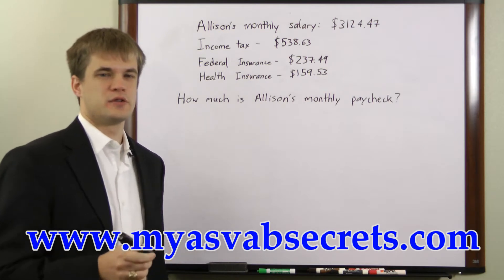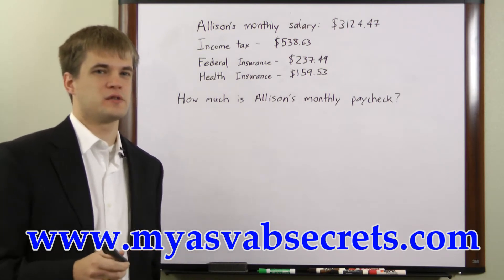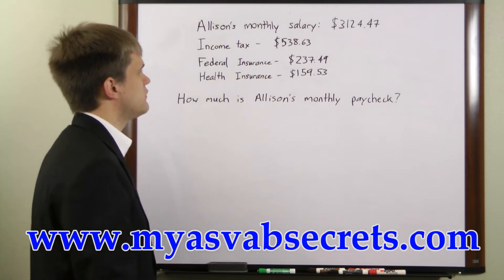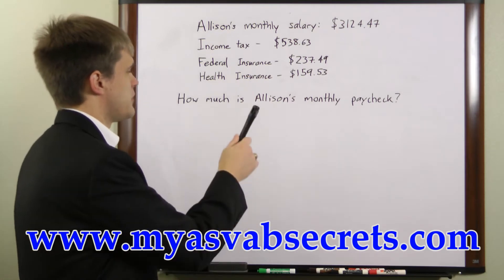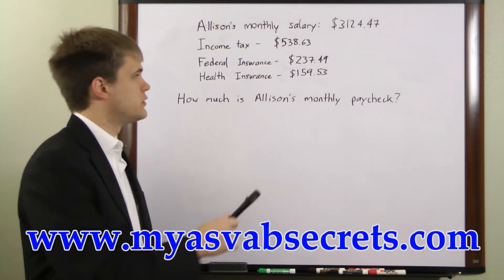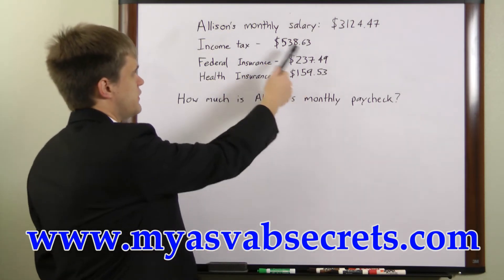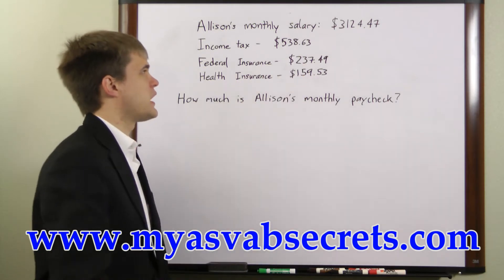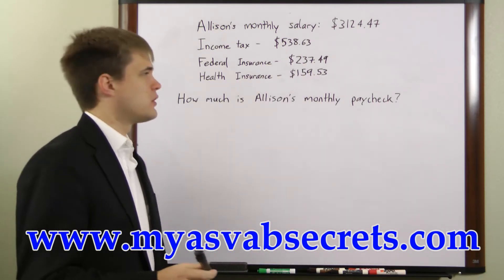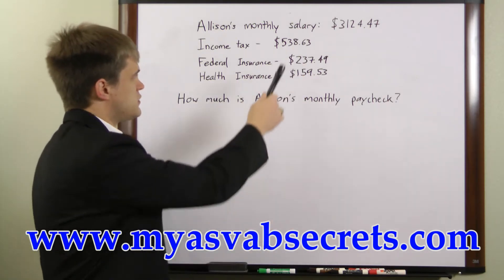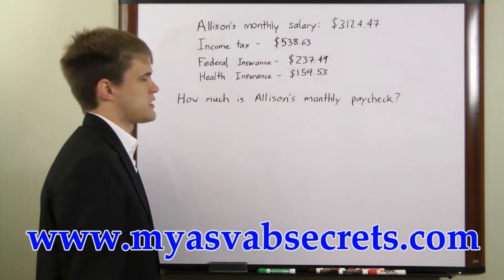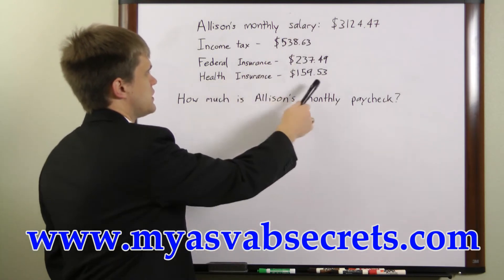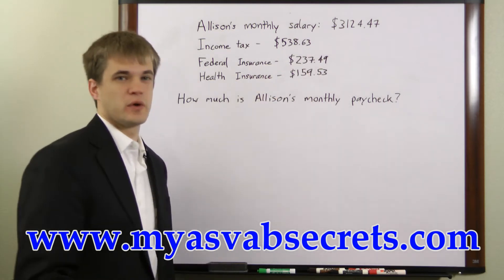Now there are two ways you can go about calculating this. You can either subtract each term individually from the salary amount, or you can sum all the deductions and subtract that sum from the salary amount. If you go with the first method you have three subtractions. If you go the second way you just have one addition and one subtraction.